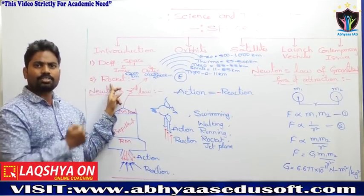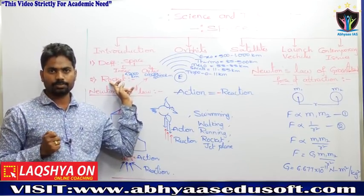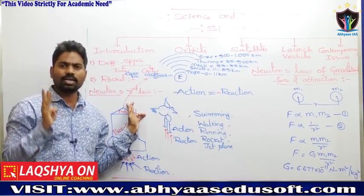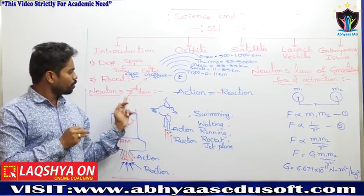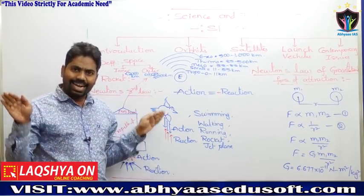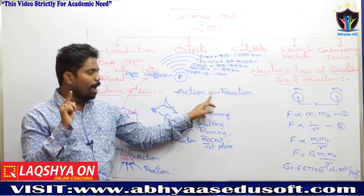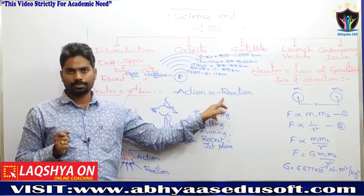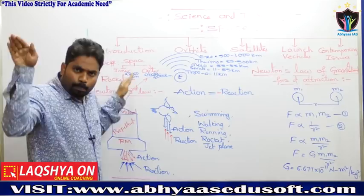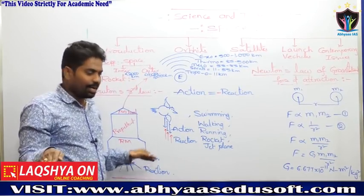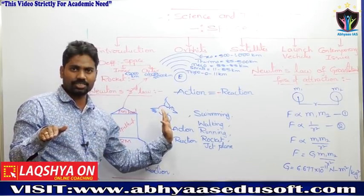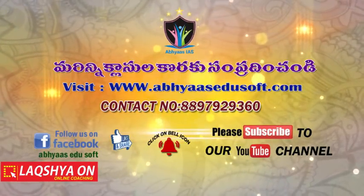Another technical term is rocket. To understand rockets, we need Newton's Third Law: every action has an equal and opposite reaction. For example, a flying bird presses air downward (action), and the air pushes the bird upward (reaction). This principle applies to how rockets work.